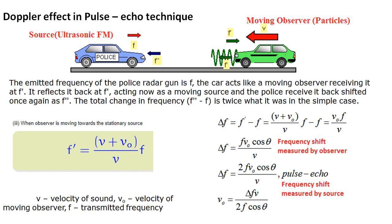The frequency shift delta f is calculated as f × v₀ × cos θ / v for the case where the observer measures it. In the ultrasonic Doppler flow meter using the pulse echo technique, the transmitter itself acts as both source and observer, so the shift is doubled: delta f = 2 × f × v₀ × cos θ / v. From this we derive the flow velocity v₀ = delta f × v / (2 × f × cos θ), where f is the transmitted frequency and v is the velocity of sound.